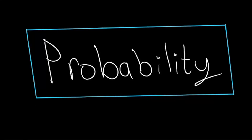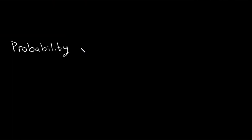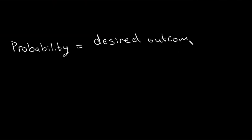Probability. So what is probability? Probability is the likelihood of getting a certain outcome. It's calculated using this formula: the desired outcome, which is the outcome that you want, divided by all possible outcomes.